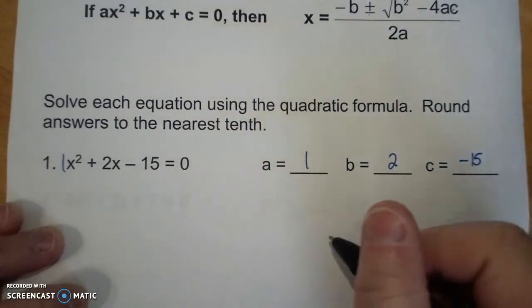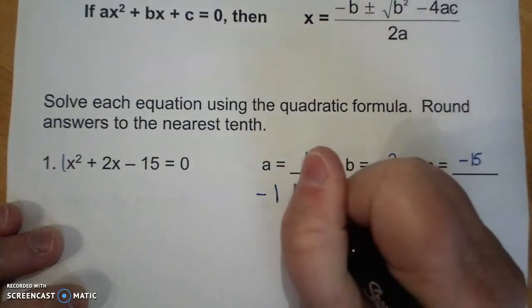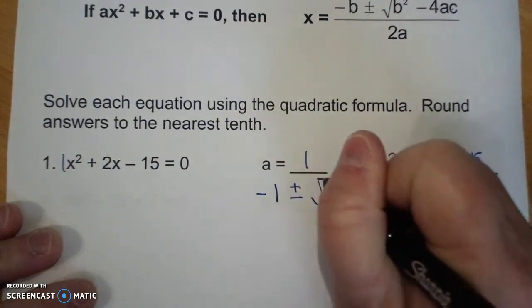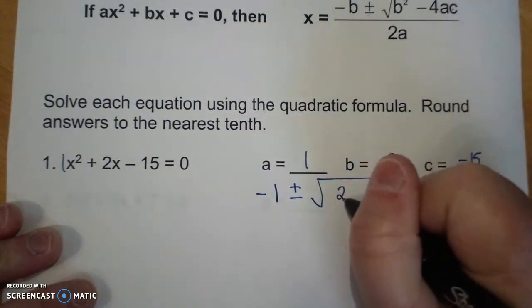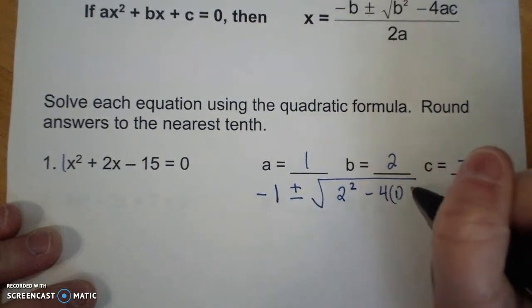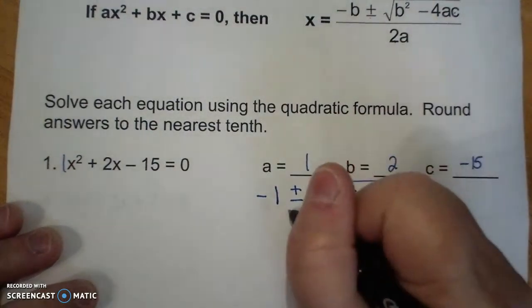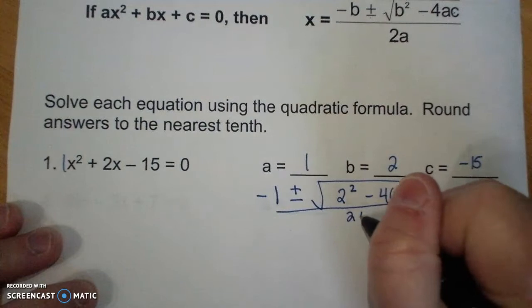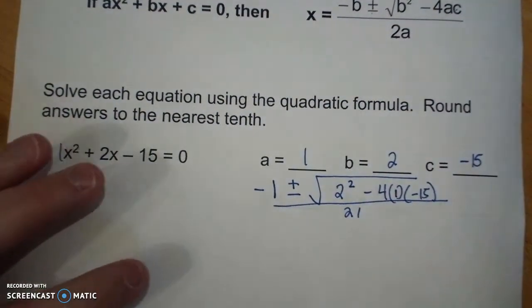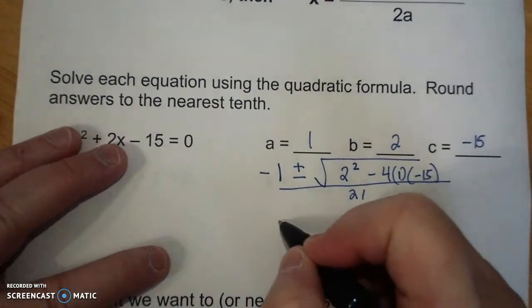So it is the opposite of 1 plus or minus the square root of 2 squared minus 4 times 1 times negative 15. I'm going to do this in a couple of steps.